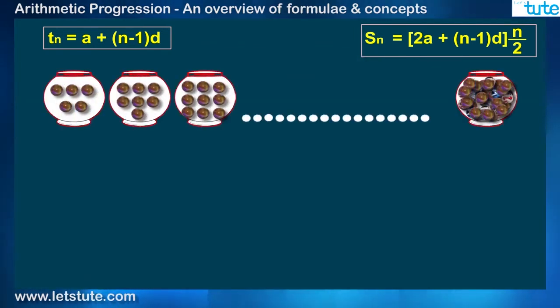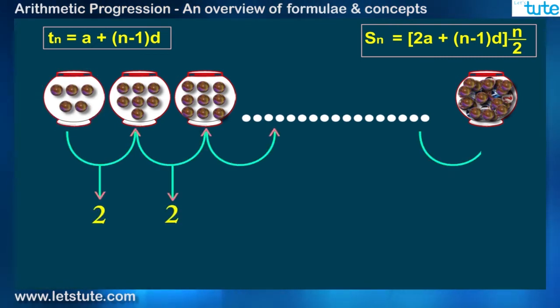Look at this arrangement of pots. In each pot, there are some marbles put in the order of arithmetic progression, starting from 5 marbles in the first pot. Now I will try to relate it with our formula.